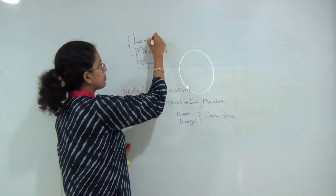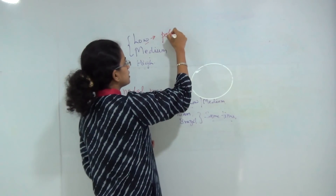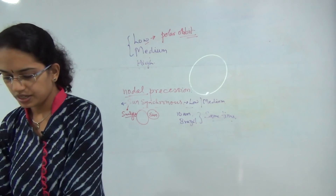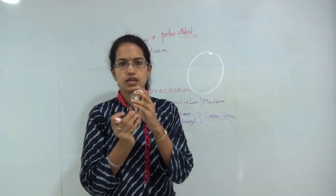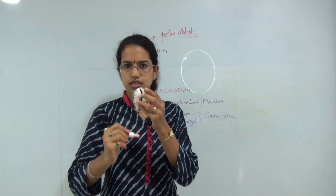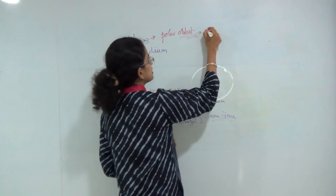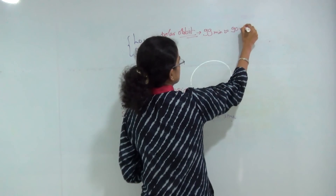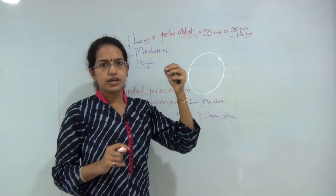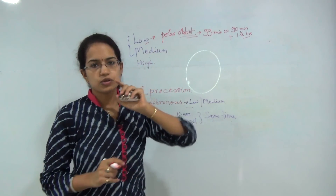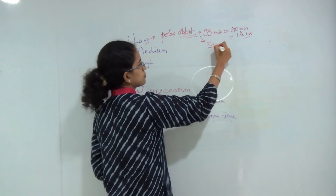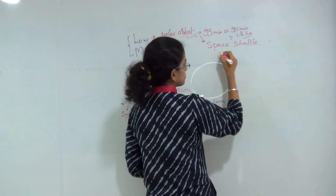Low orbits include polar or near-polar orbits. A polar orbit rotates perpendicular to earth's axis — across the poles — in a north-south rotation. It completes its cycle in approximately 99 minutes, or roughly 90 minutes (one and a half hours). We also call these near-polar orbits. Best examples of polar orbits are space shuttles — specifically the Hubble Space Telescope.